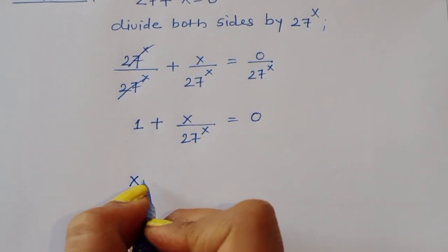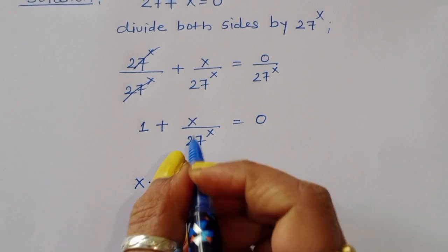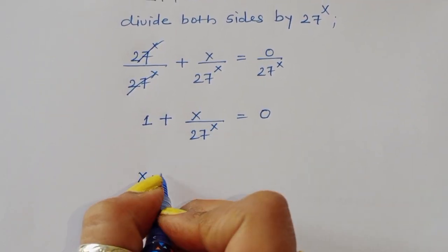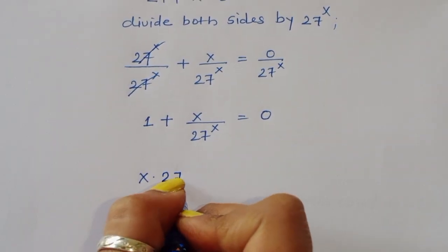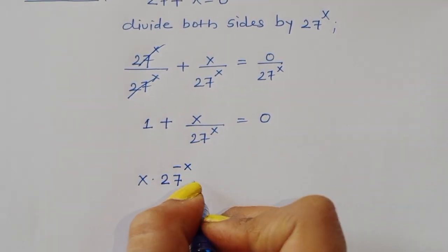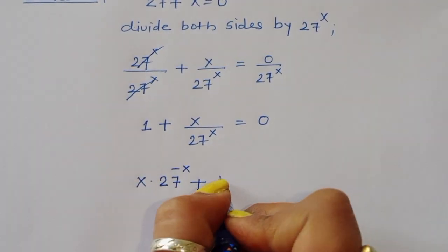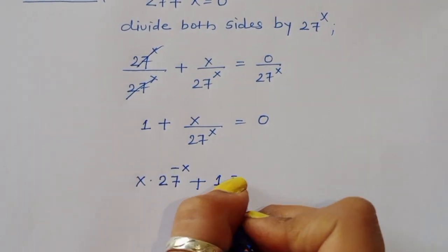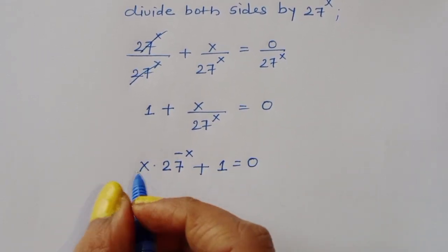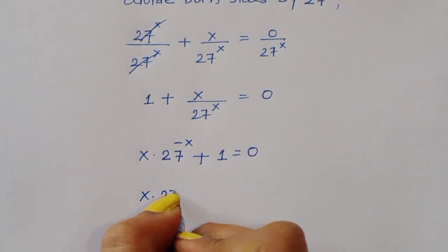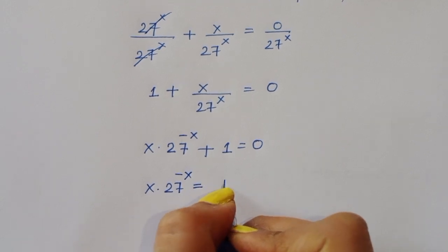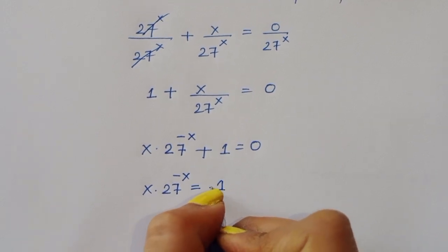Since x divided by 27 power x can be written as x times 27 power minus x, we get: x times 27 power minus x plus 1 equals 0, which gives x times 27 power minus x equals minus 1.